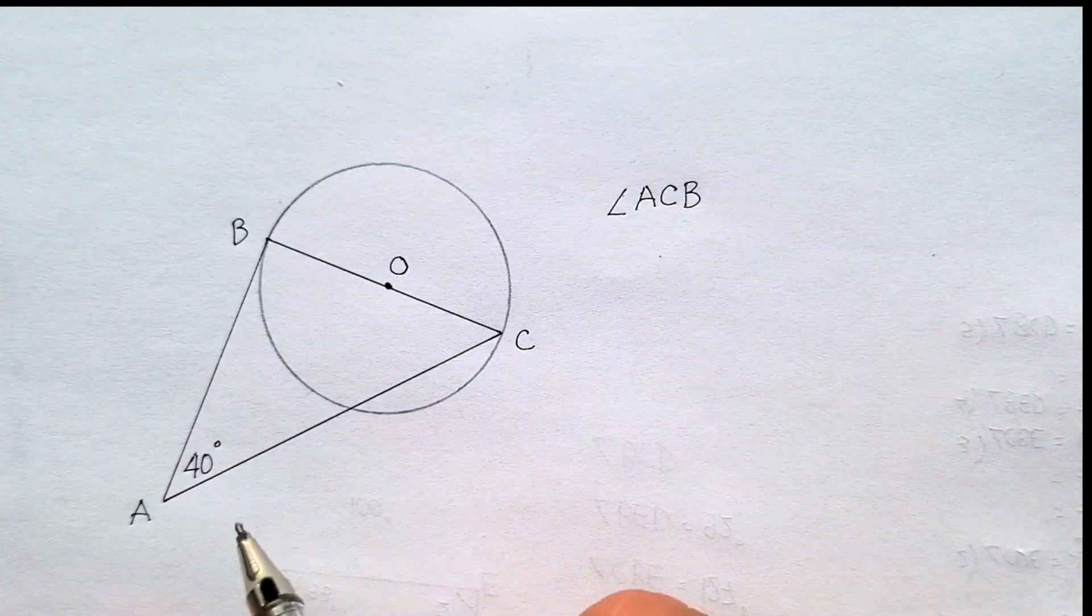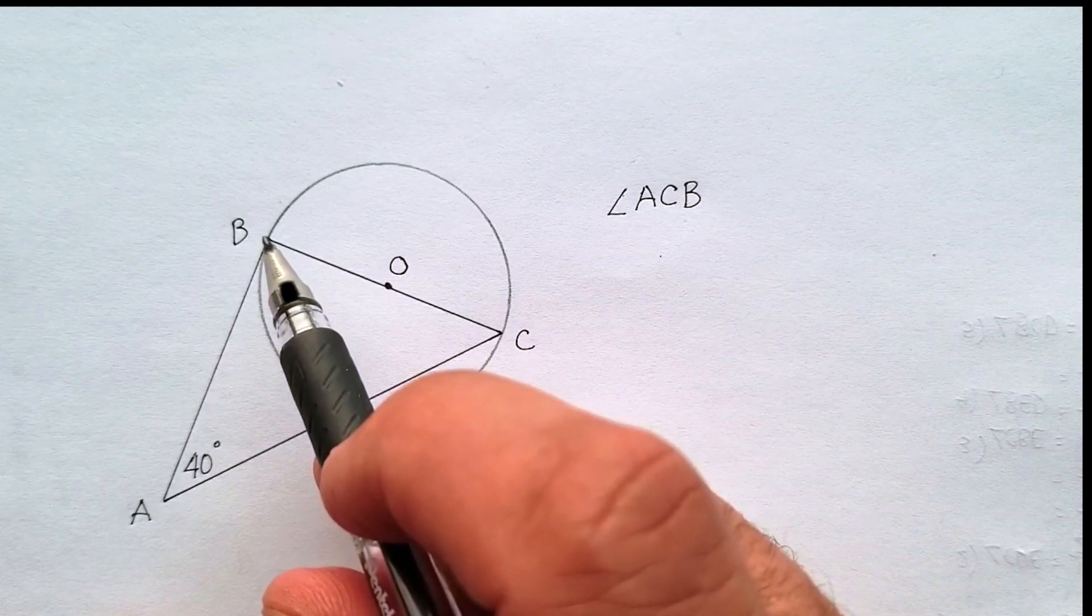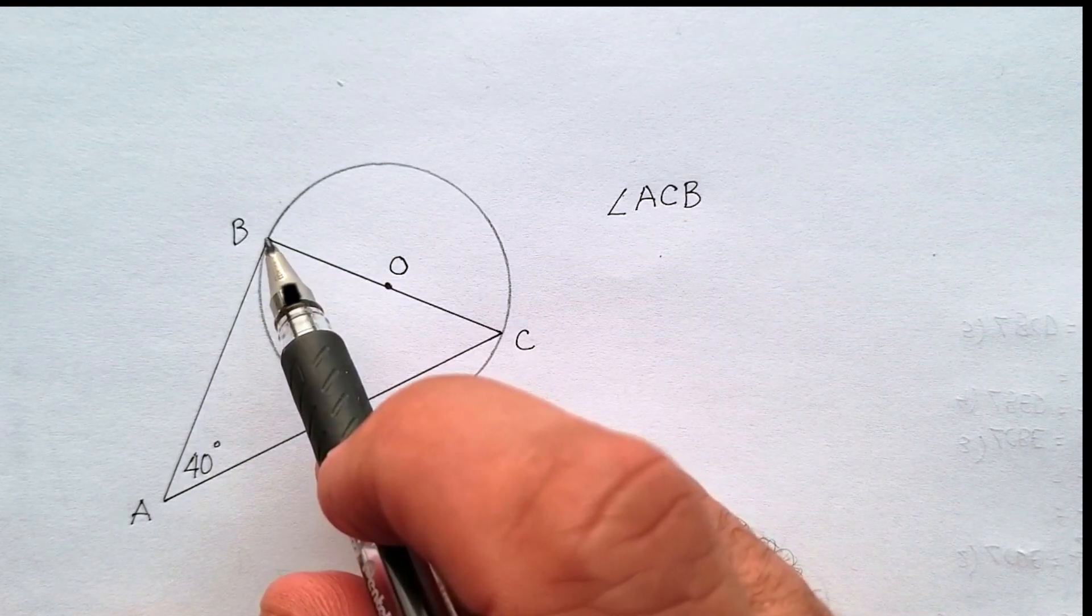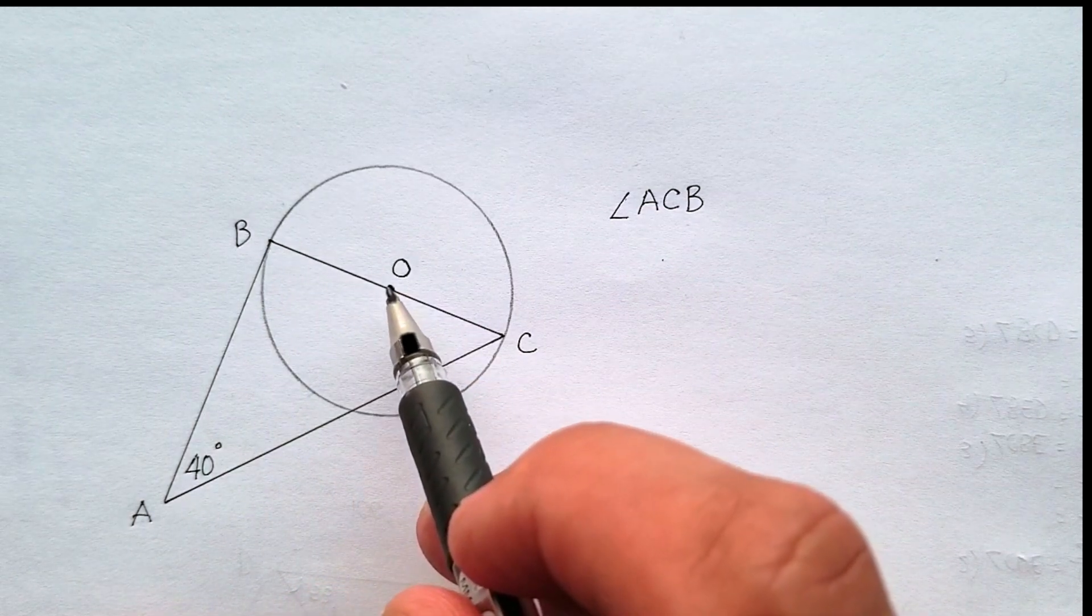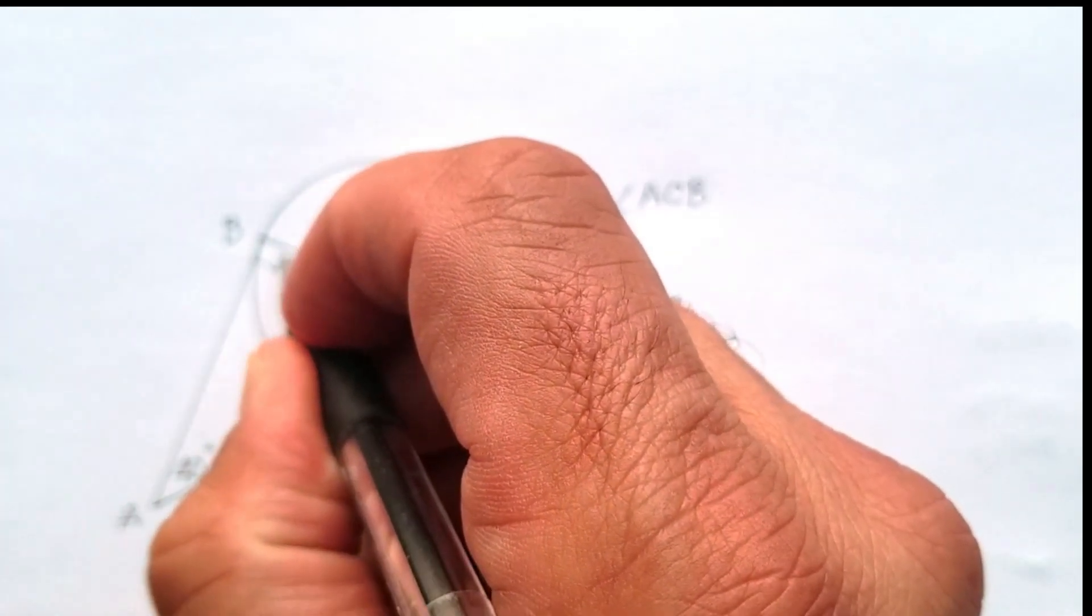Now in this case, we know, for example, that A-B is a tangent line, because it looks like it's intersecting at one spot. Since it's a tangent line, it forms a right angle with the center of the circle. So let's, we know that this point is 90 degrees.